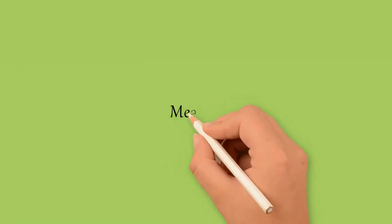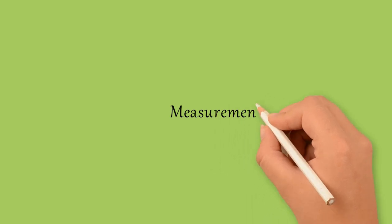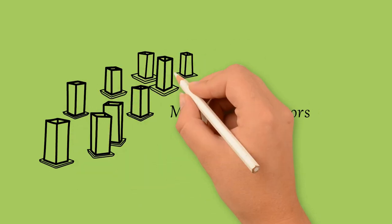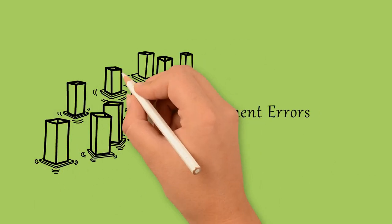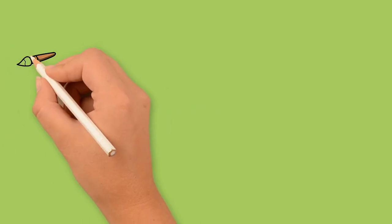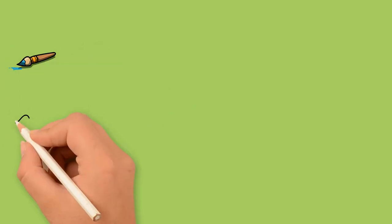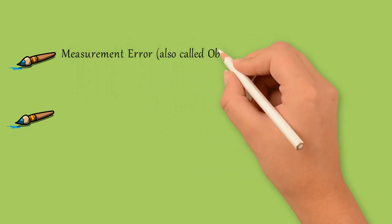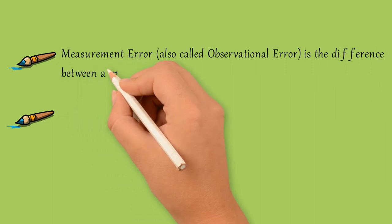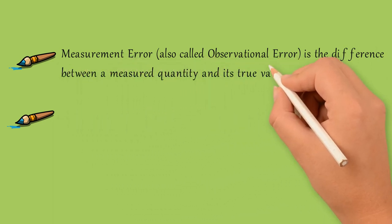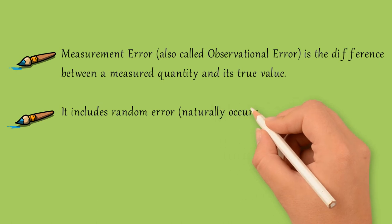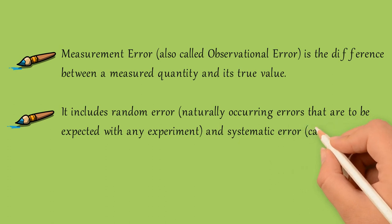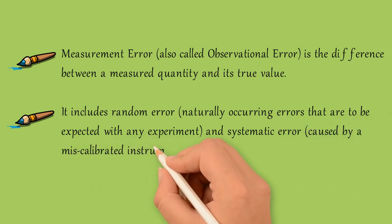First of all, we'll have a look at what measurement errors are — yeh kya hootay hain aur kis tareeqe se yeh kaam kertay hain. Measurement errors are also called observational errors. It is basically the difference between a measured quantity and its true value — aapne kisi bhi cheez ki quantity ko measure kiya, aur us cheez ki quantity kya honi chahiye thi aur aapke paas kya aayi — in dono values mein jo difference hai woh basically aapka measurement error hota hai.